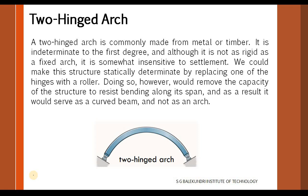A two-hinged arch is commonly made from metal or timber. It is indeterminate to the first degree — two unknown reactions at each support gives four unknowns, but we have only three equilibrium equations. It is somewhat insensitive to settlements. We could make this structure statically determinate by replacing one of the hinged supports with a roller; however, doing so would remove the capacity of the structure to resist bending along its span, and as a result it would serve as a curved beam and not an arch.